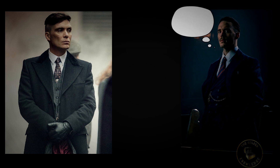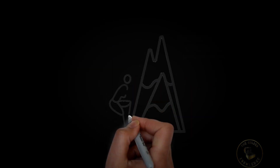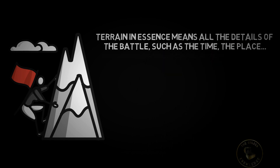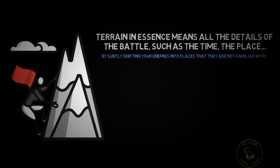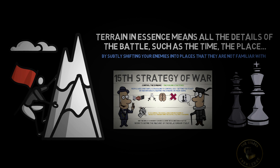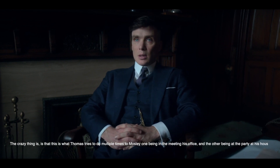Mosley is the one that determines the overall pace, direction and shape of the relationship itself, and one way he does this is by shifting the battlefield to his favour. An enemy will always want to naturally fight you on familiar terrain. Terrain, in essence, means all the details of the battle — such as the time, the place, what is being fought over, who is involved and so on. But by subtly shifting your enemies into places they are not familiar with, you then start to control the dynamic. Without realising it, your opponents will find themselves fighting on your terms. And this is what Thomas tries to do multiple times to Mosley.